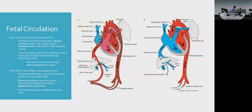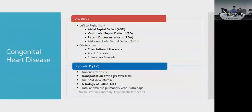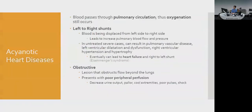Congenital heart diseases are best split into two categories: acyanotic and cyanotic — whether or not the baby turns blue. Acyanotic conditions are also usefully divided into those with a left-to-right shunt and those that are obstructive. The reason acyanotic lesions don't cause cyanosis is that blood still passes through the pulmonary circulation, so sufficient oxygenation occurs.